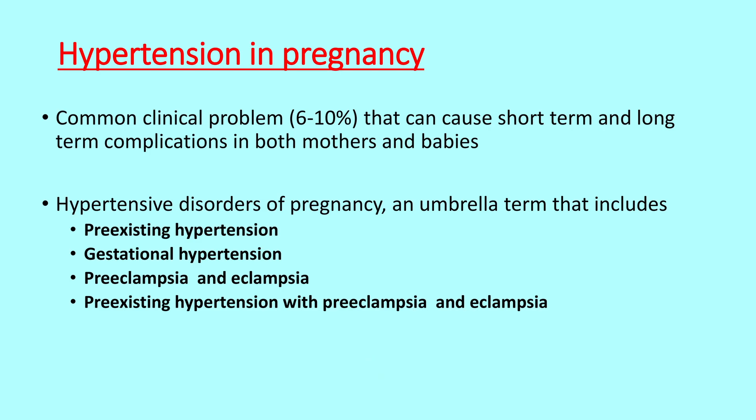Coming to hypertension in pregnancy, it is a common clinical problem which afflicts about 6-10% of all pregnancies and can cause short-term and long-term complications both in the mother as well as the babies. Hypertensive disorders of pregnancy can be classified as pre-existing hypertension, gestational hypertension, pre-eclampsia and eclampsia, and pre-existing hypertension with eclampsia and pre-eclampsia.